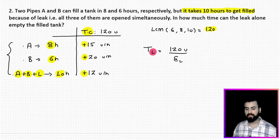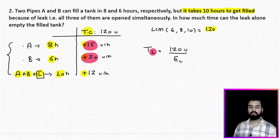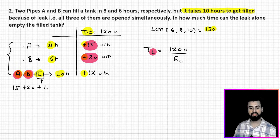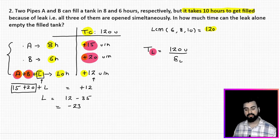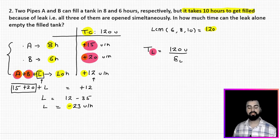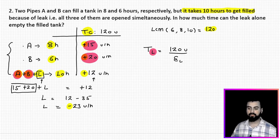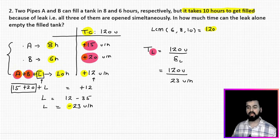To find the individual efficiency of the leak, I set up: 15 + 20 + (efficiency of leak) = 12. That gives 35 + (leak) = 12, so the efficiency of the leak is 12 − 35 = −23 units per hour. The negative sign is expected since the leak works in the opposite direction. So the leak empties 23 units per hour. To empty a completely filled tank of 120 units at this rate, simply divide: 120 divided by 23 gives the time taken by the leak alone.